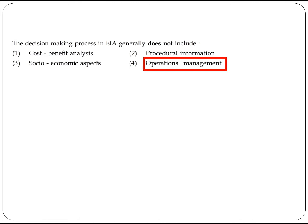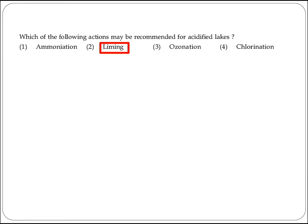The next question asks what the decision-making process in EIA generally does NOT include. The answer is operational management. Option 4 is the right answer.